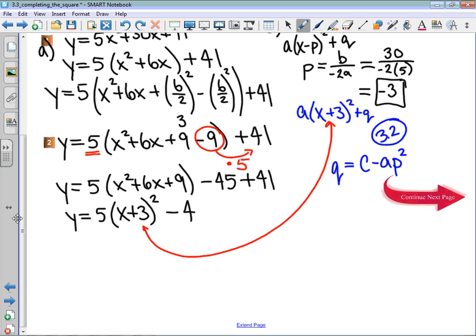And I'd like to quickly just show that if we did try this, my q parameter would be the original c, the constant which was 41, minus a which was 5, times p squared which is going to be positive 3 squared. That means that q should be 41 minus 45, so q should be the negative 4 that we got through our completing the square technique.